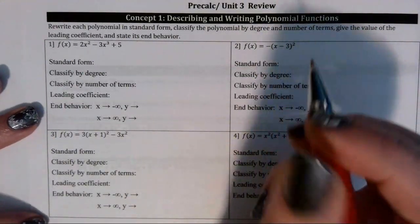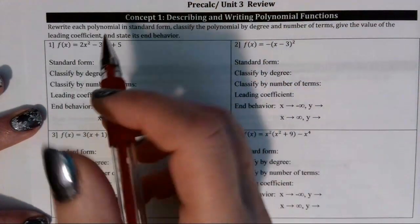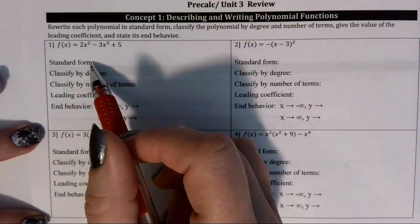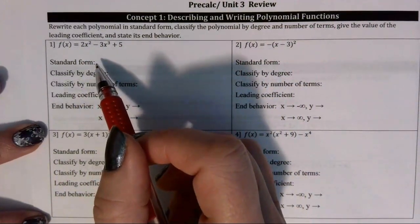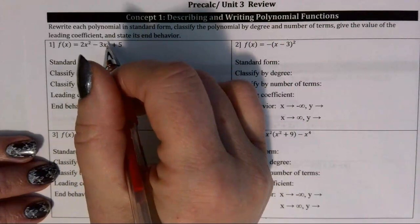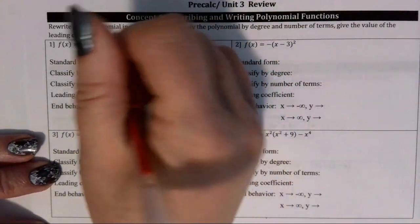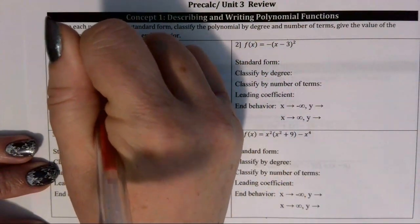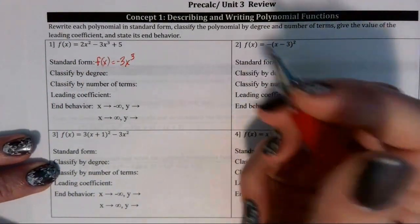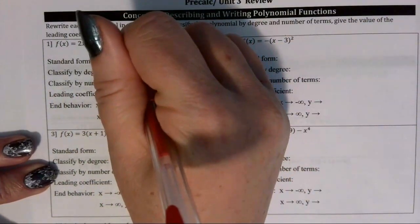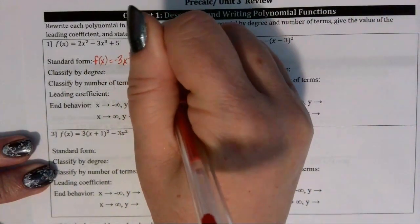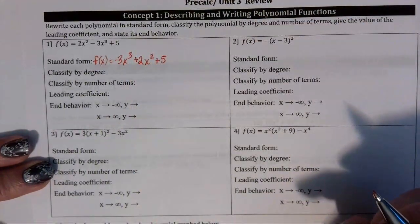In number one on the review, we want to put the polynomial 2x squared minus 3x cubed plus 5 into standard form. Standard form puts the terms of the polynomial in decreasing order of exponent. So our highest degree term is cubic, meaning negative 3x to the third would be listed first, followed by our quadratic term, positive 2x squared, and then our constant at the end, plus 5.